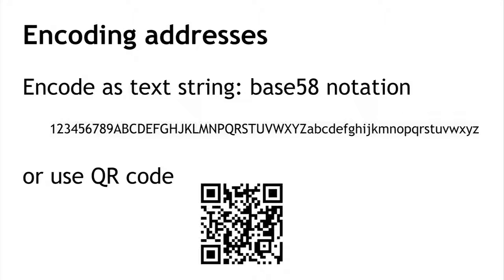The second method for encoding a Bitcoin address is as a QR code — a simple 2D barcode. You can point your phone at it, take a picture, and your phone can scan it and recover the bits of the address. You might use this in a store or for phone-to-phone communication. My phone might display a barcode with my address on it, and your phone takes a picture to get the address. This one down here actually is an active address, so if you'd like to give me some Bitcoins, feel free.